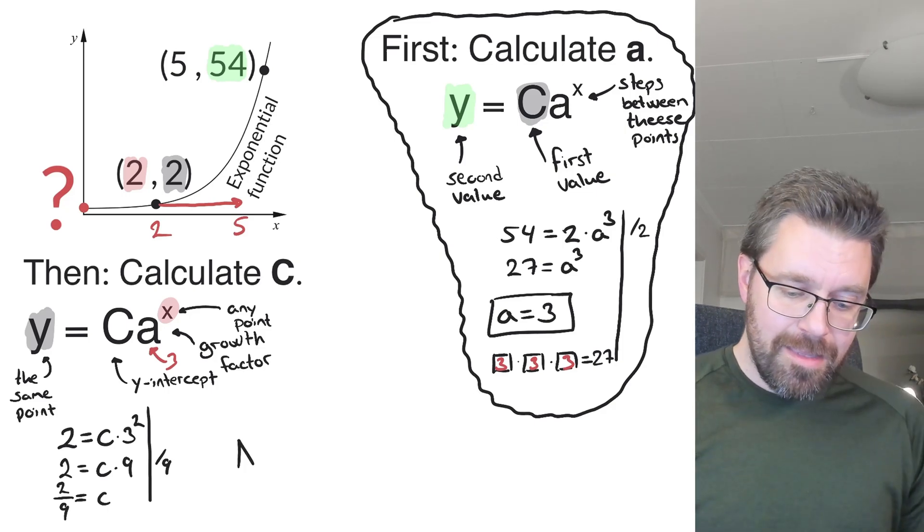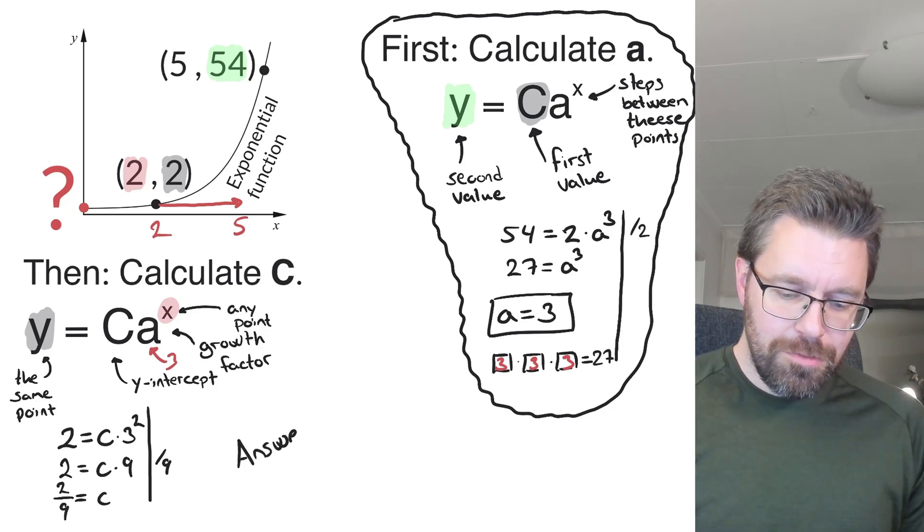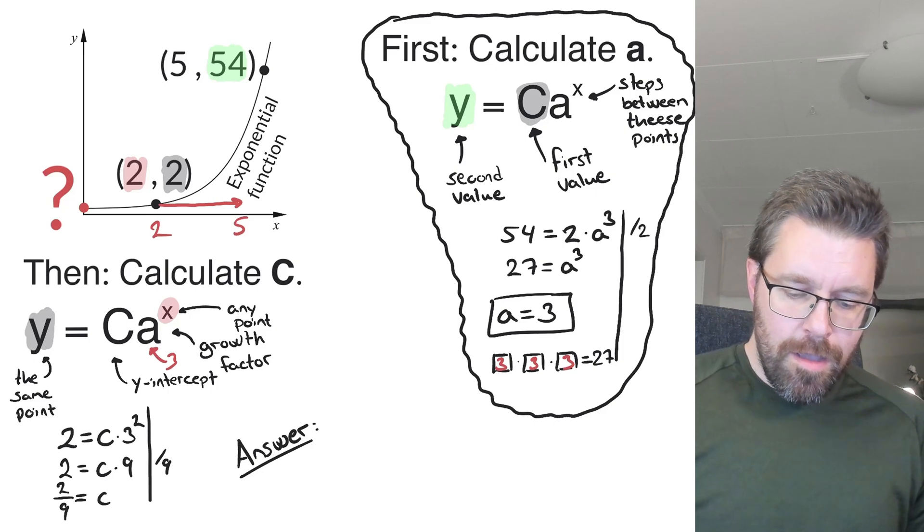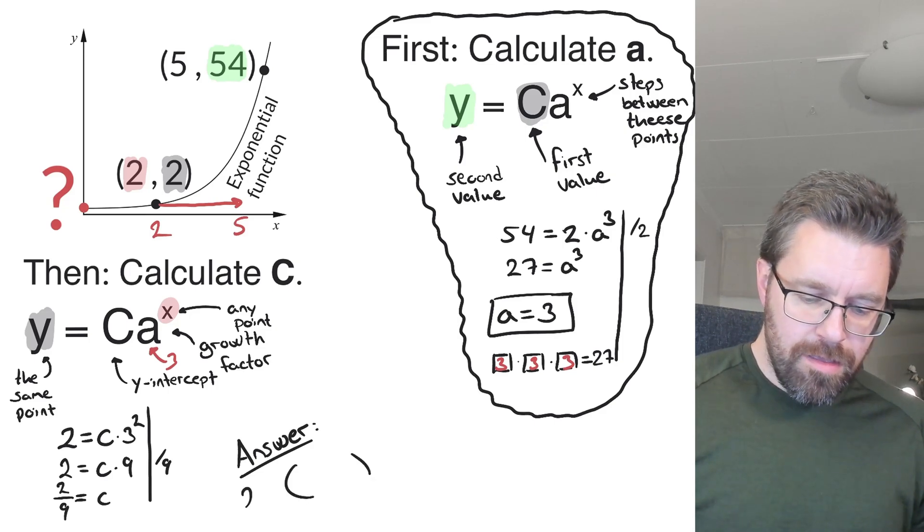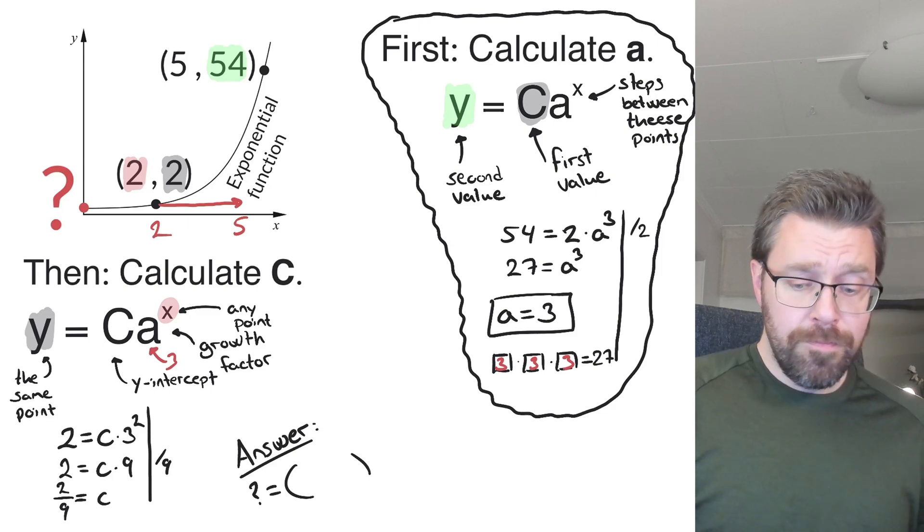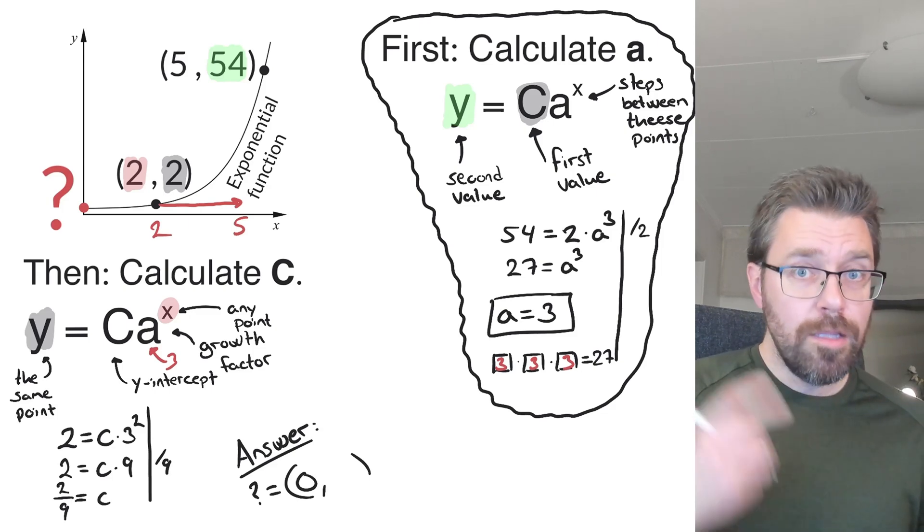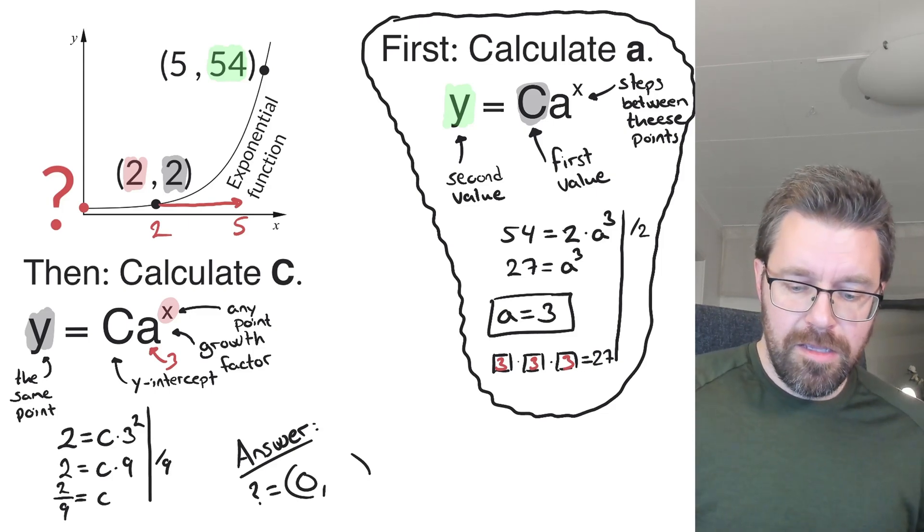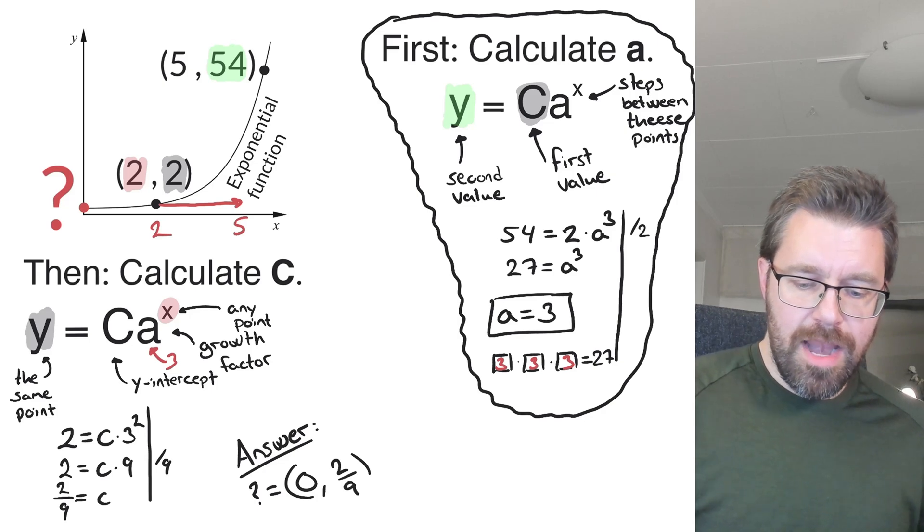And then the answer to the question: which point equals the question mark? The x value is of course 0, and the y value is 2 over 9.